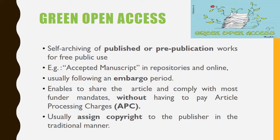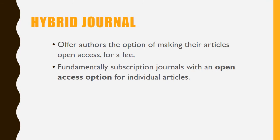A hybrid journal is basically a combination — subscription-based plus open access. In a fundamentally subscription-based journal, certain articles are on a payment basis and certain are open access. Authors can decide whether they need to make their articles open access, for which they will have to pay the article processing charges.